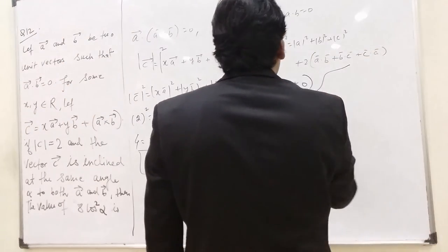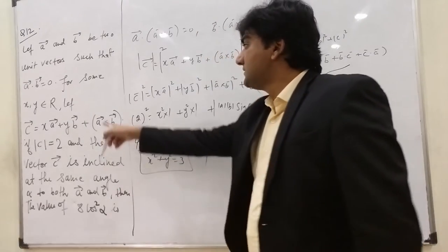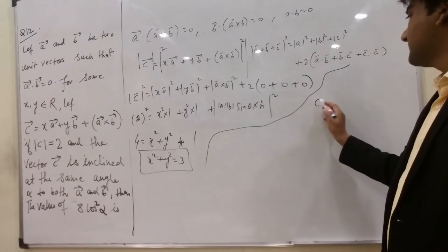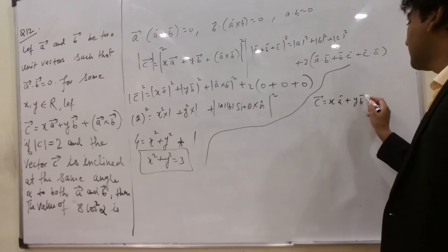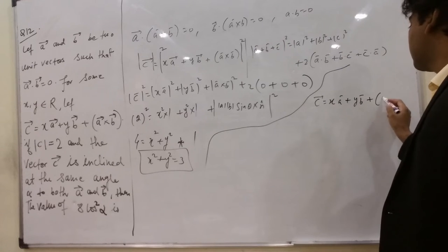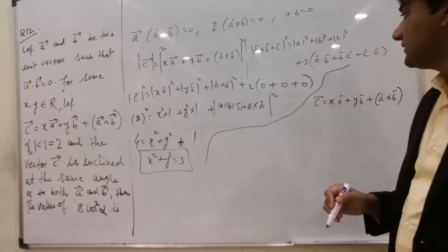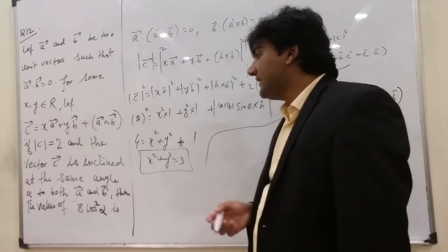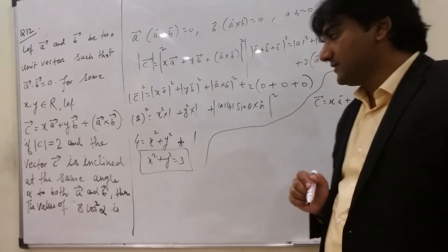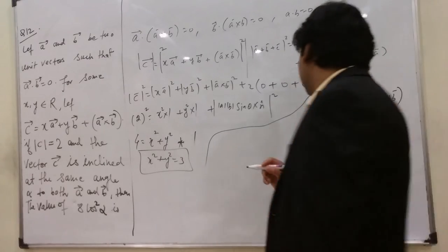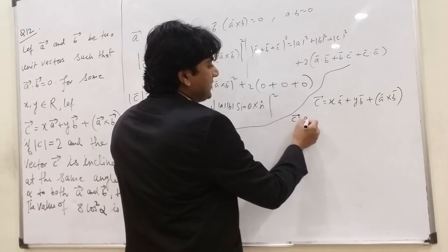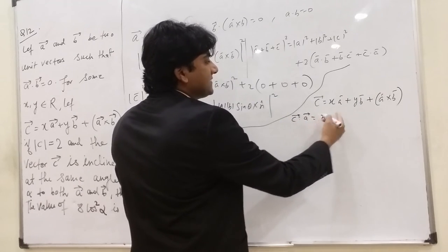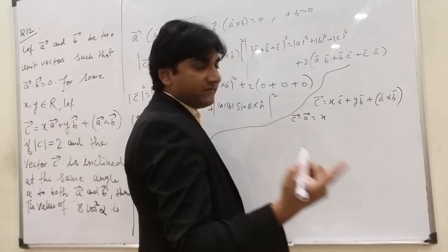Okay. Now, C equals x A plus y B plus A cross B, right? Now, angle between C and A and C and B, both are same, that is alpha. Apply both sides dot A. So this is C dot A which is x. A dot A is mod A square. A is a unit vector, so this is 1.